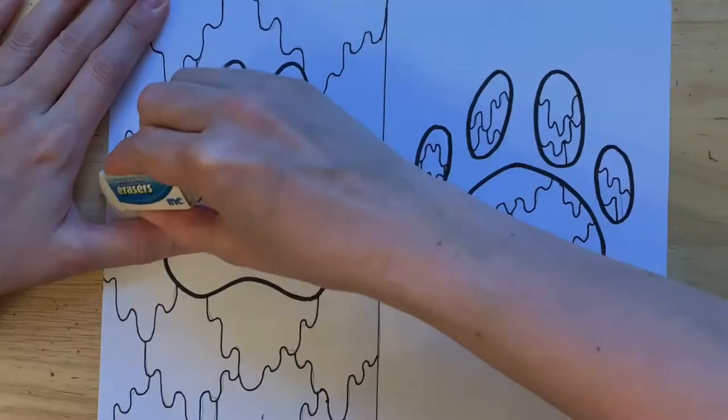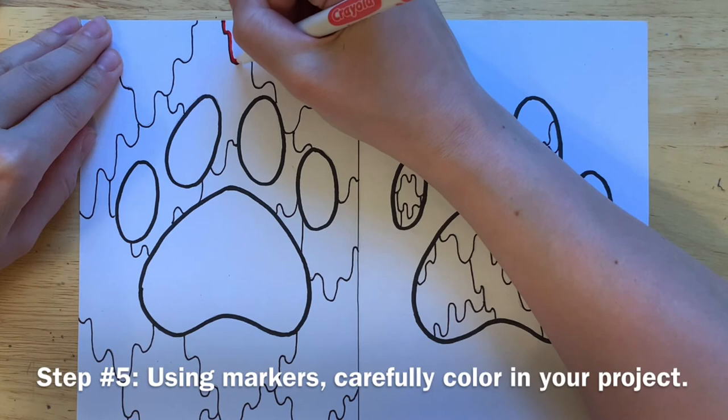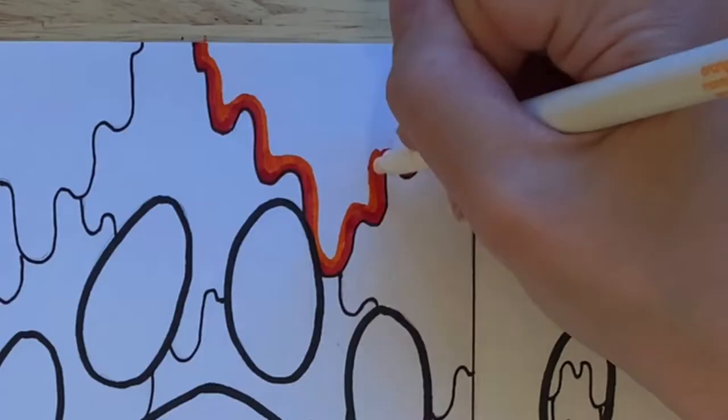You are now ready to color in your project. Using colorful markers, carefully color in your drip design. To keep myself organized, I decided to start on the left hand side of my paper first.